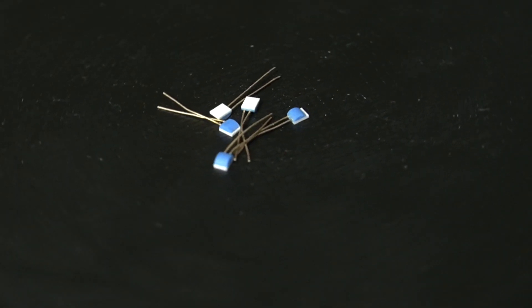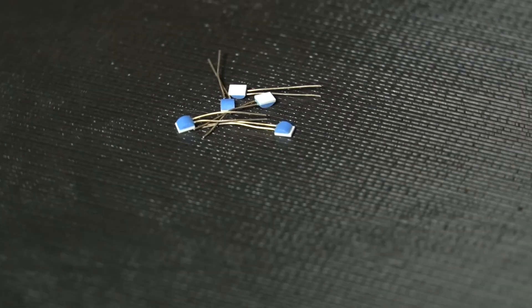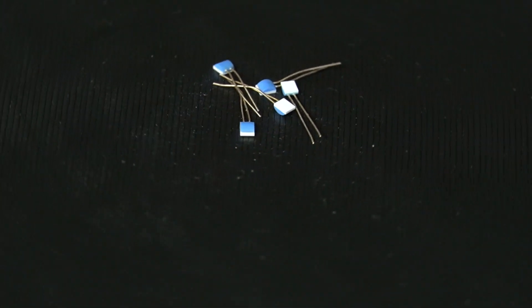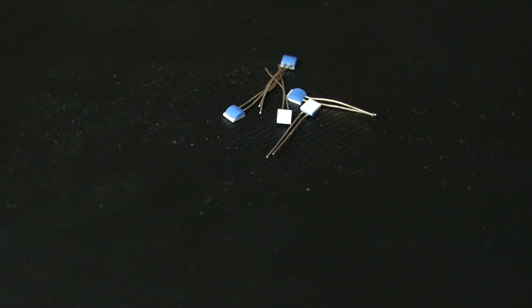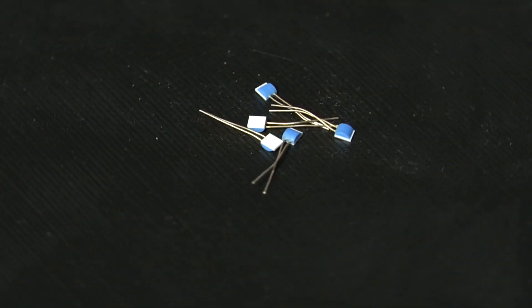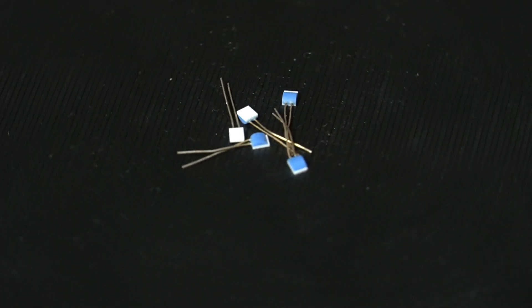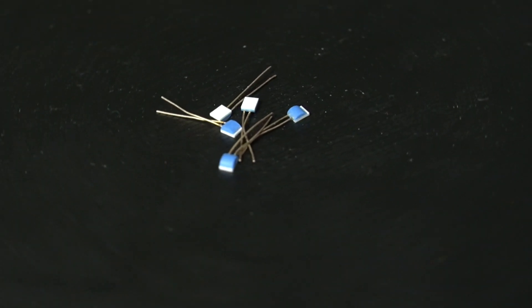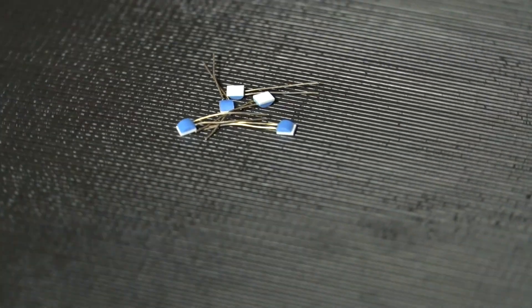Now moving on, the next sensor to look at is the RTD, or resistance temperature detector thermistor. This is also a temperature-dependent resistor, but this thing is built from conductors rather than semiconductors, so its resistance increases with temperature. So this is a positive temperature coefficient thermistor.